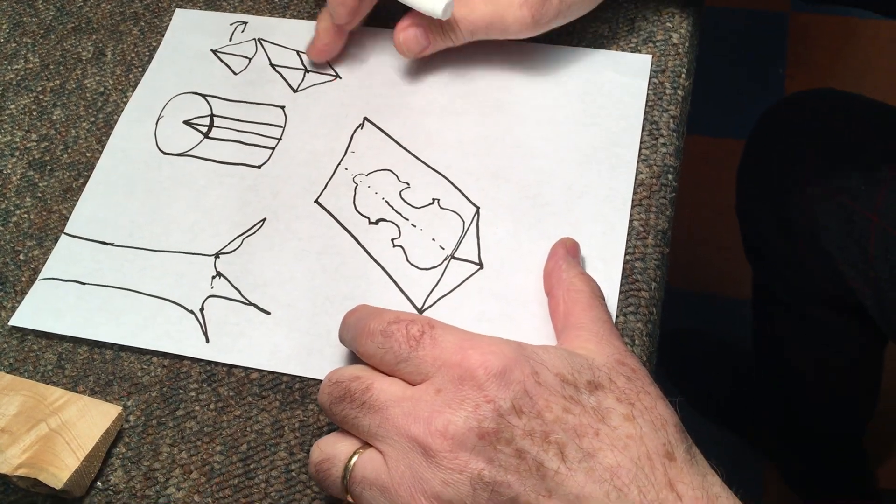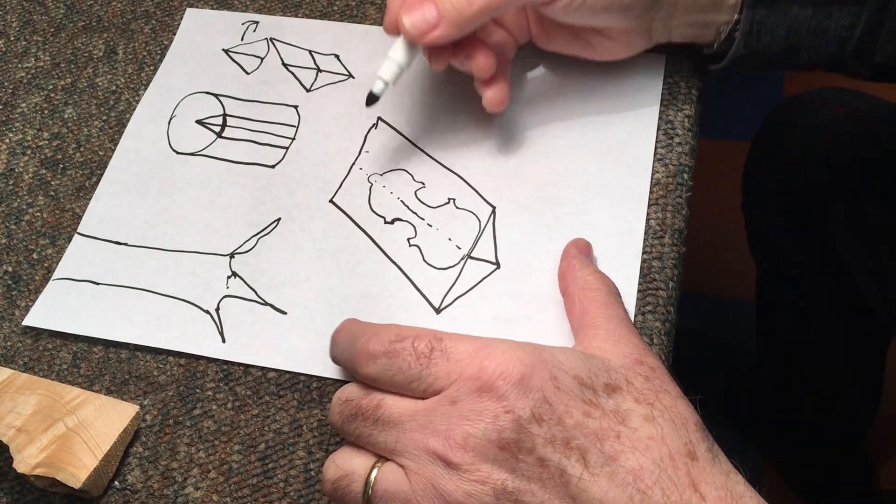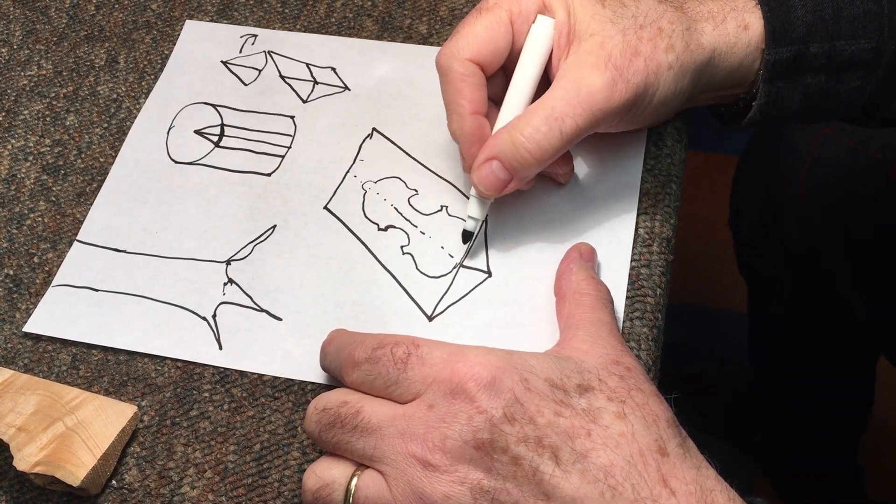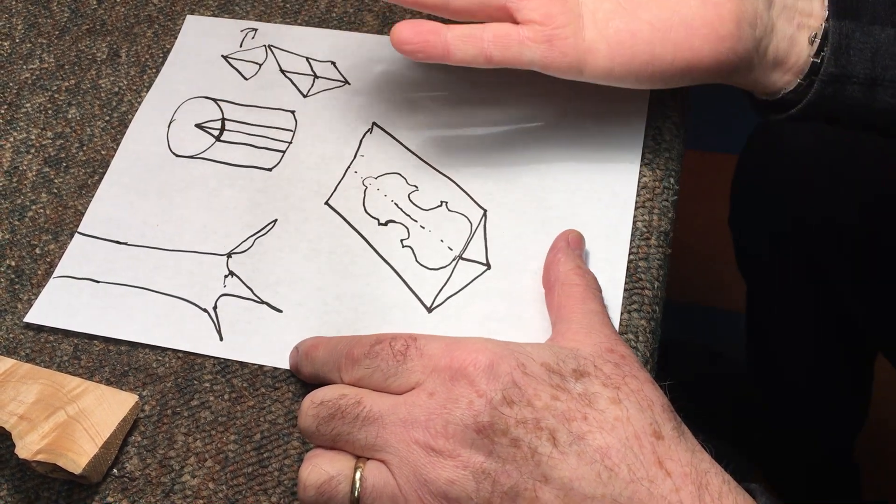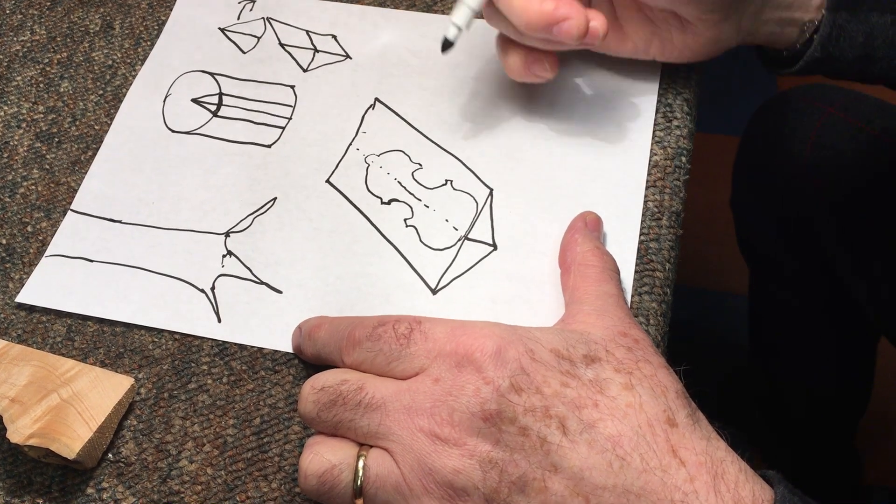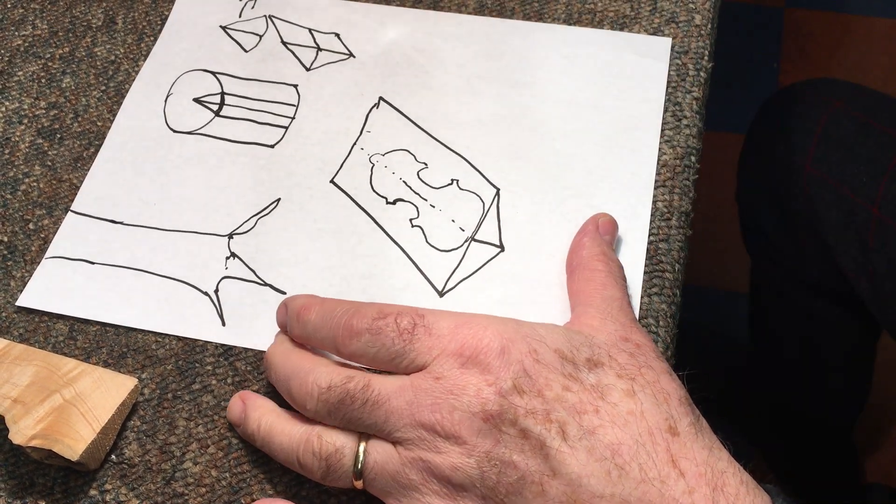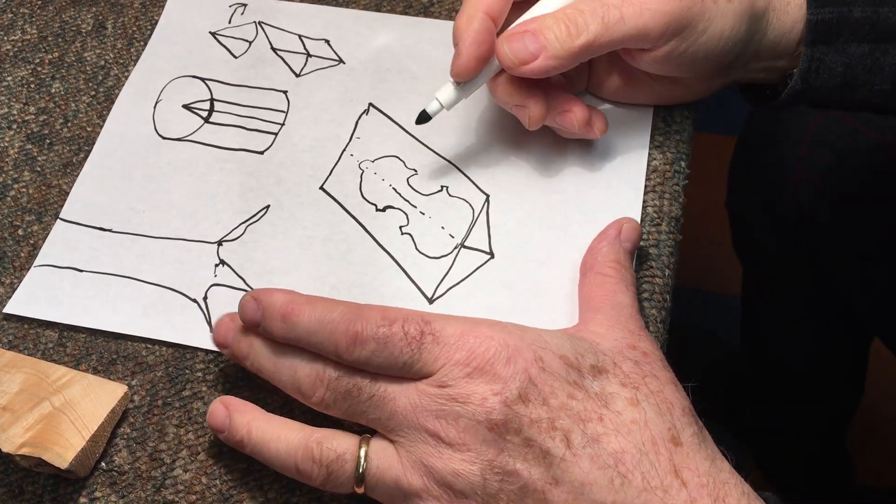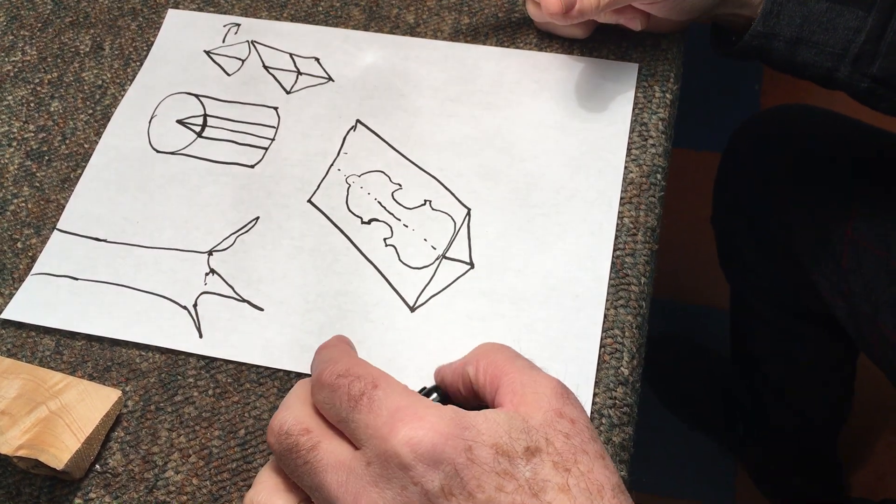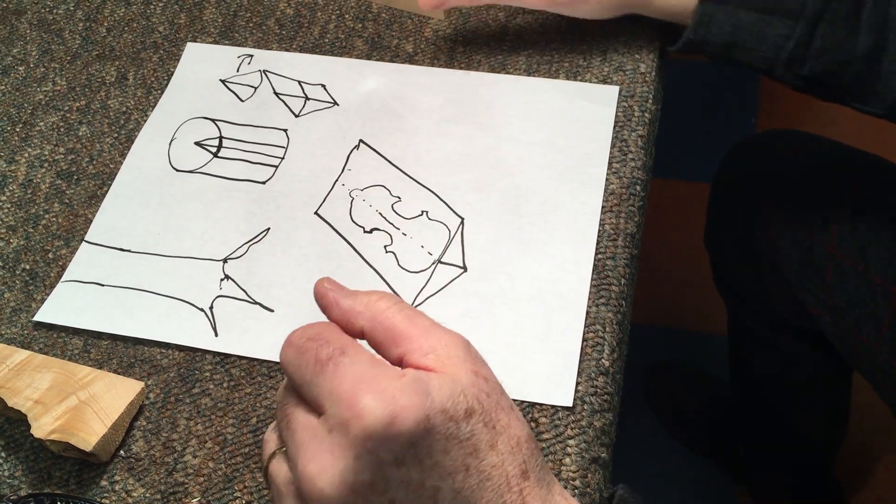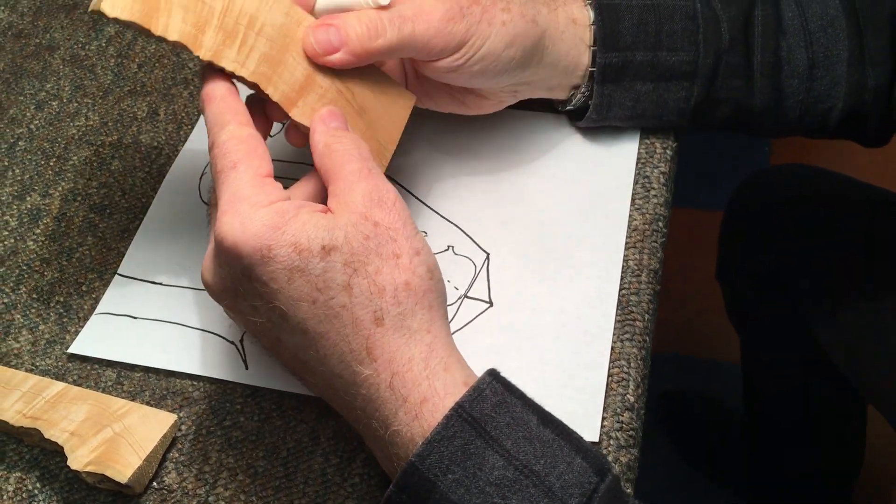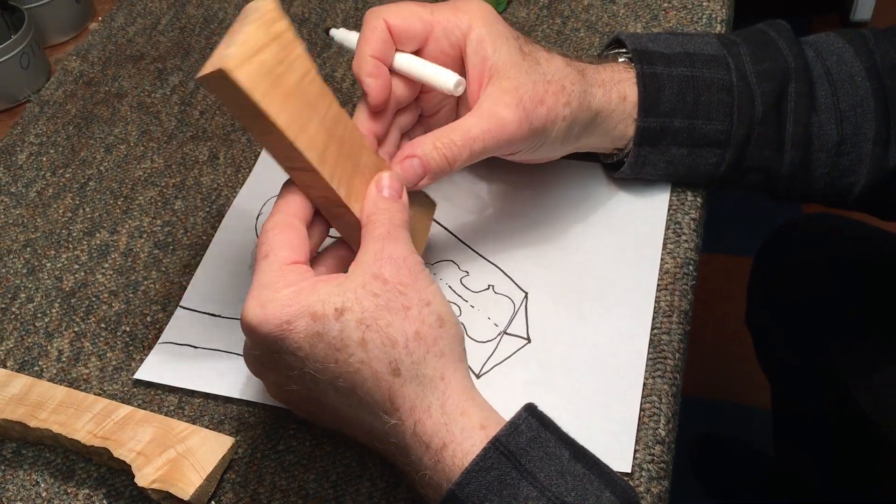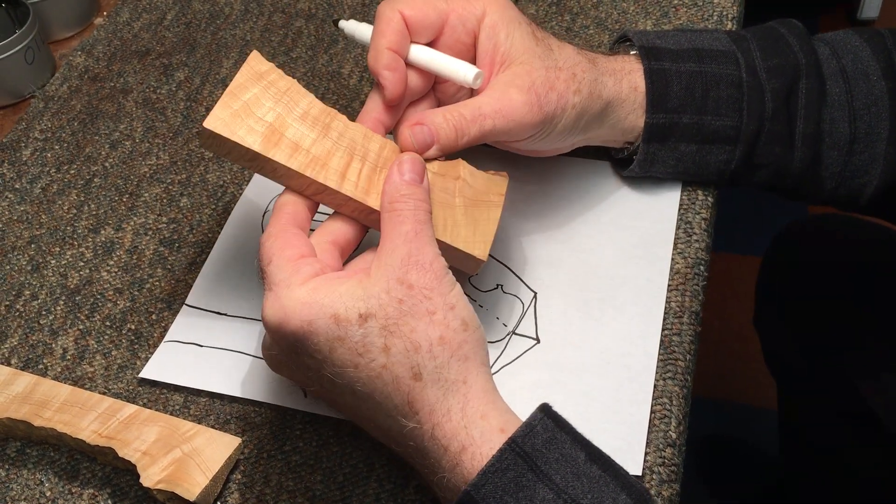And then you have this flat side over here. And you lay your violin outline on there. And that gets sawn out. One side is flat. That goes towards the inside of the instrument. And the arched exterior is carved out of this shape that you have on the outside. And that's where you get the arching from. And that's where the beautiful flames and figure of the wood comes from, comes from the nature of the tree.